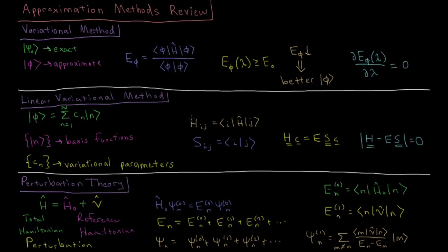You have these matrix elements in the Hamiltonian matrix where you have the integral of basis function I star times the Hamiltonian acting on basis function J. And you have the overlap integrals of the overlap matrix S_ij, the integral of basis function I star times basis function J over the entire domain of the wave function.